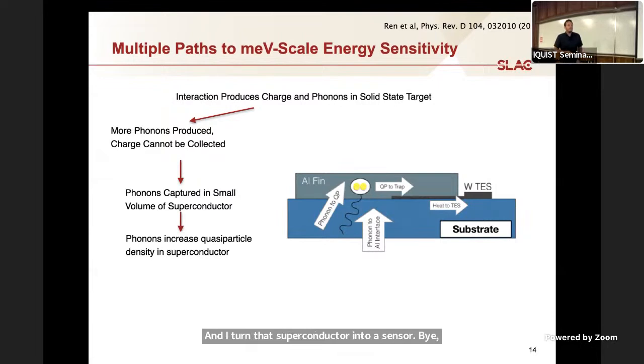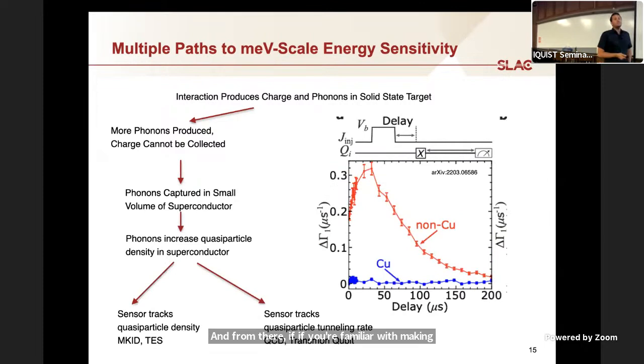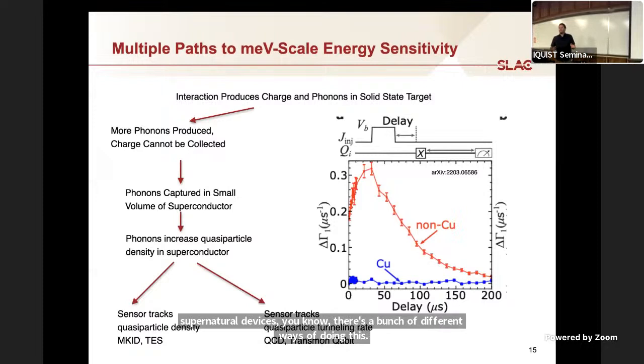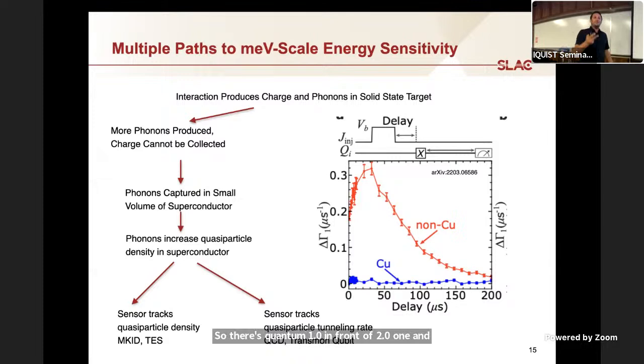There's a proximity effect which produces a trapping into a very small volume, low TC superconductor. I turn that superconductor into a sensor by using the phonons to increase the quasi particle density in the superconductor. If you're familiar with making superconducting devices, you know there's a bunch of different ways of doing this. In ATP land, everyone wants to call everything quantum. There's quantum 1.0 and quantum 2.0. Quantum 1.0 means everything we were doing. Quantum 2.0 means everything we want to get funded now. In general, quantum 1.0 in my field means things that track quasi particle density in a continuous sense, like transition edge sensors and MCIDs.